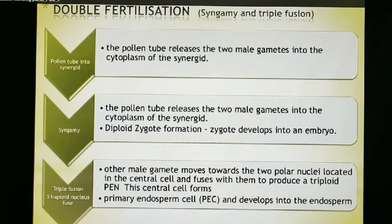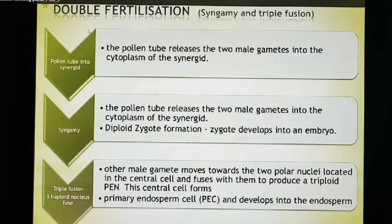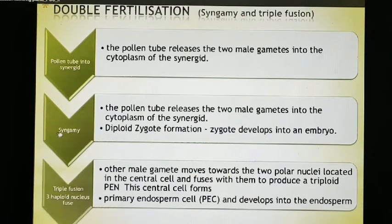Now coming to double fertilization — this is the most important topic of this chapter in your NCERT. Go through what is double fertilization, what is syngamy, and what is triple fusion. These are very important and commonly asked questions in board examinations. Pollen tube enters the synergid.